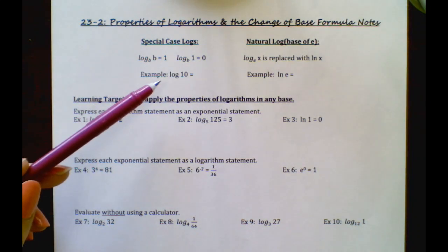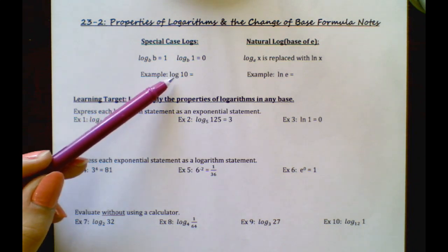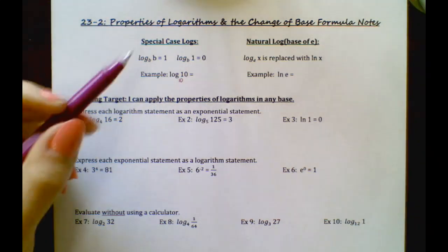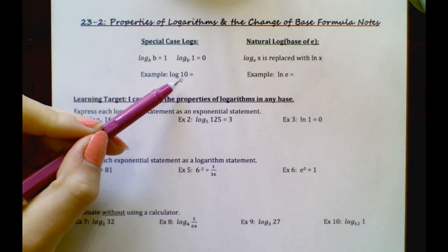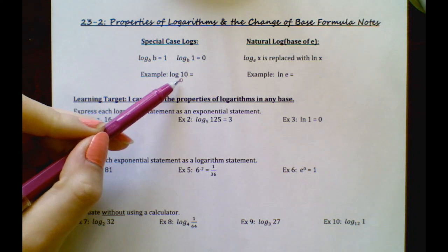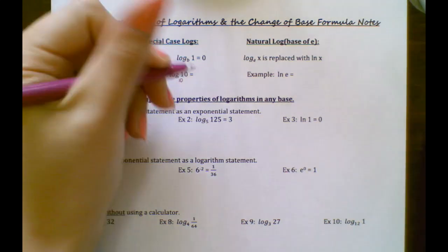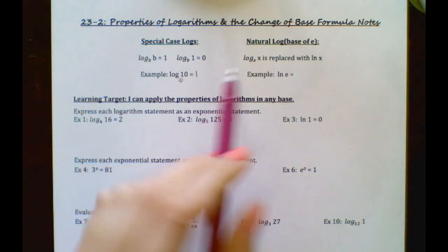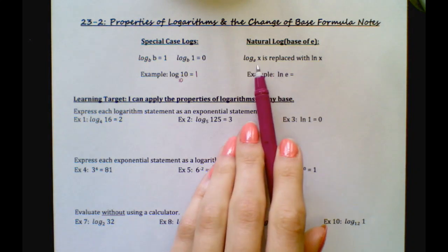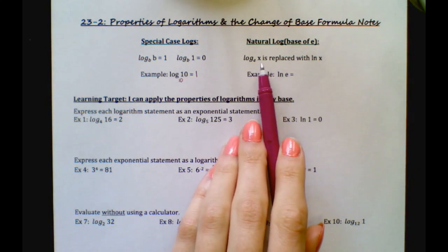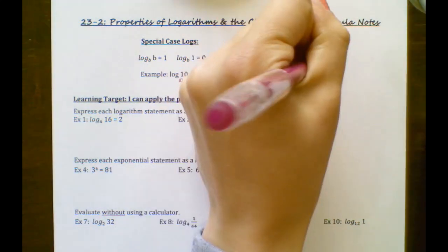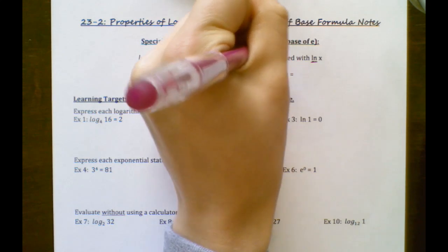In this example, we have log — remember, this is really just base 10. If there's not a number down there, there's a known 10 to be there; remember that's the common log. So this is log base 10 of 10. Because these numbers are both the same, this logarithm equals 1. Over here we have something called a natural log, meaning your log has a base of E, and we replace that with ln. ln stands for your natural log.